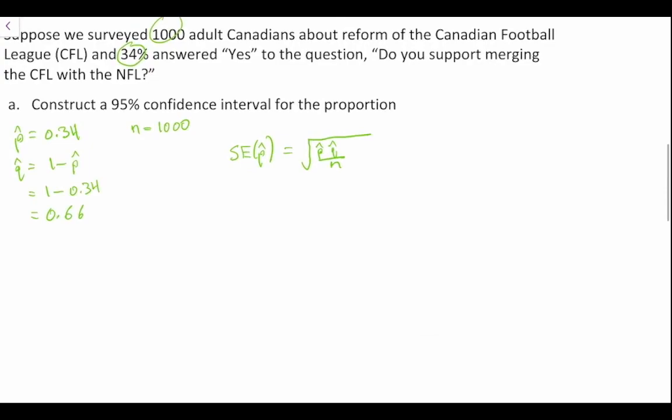We can make this a little bit bigger. This is equal to the square root of 0.34 times 0.66 divided by our sample size, which is 1,000. So this becomes the square root of 0.2244 divided by 1,000. We'll take the square root of that, and what we get is a value here of 0.01498.